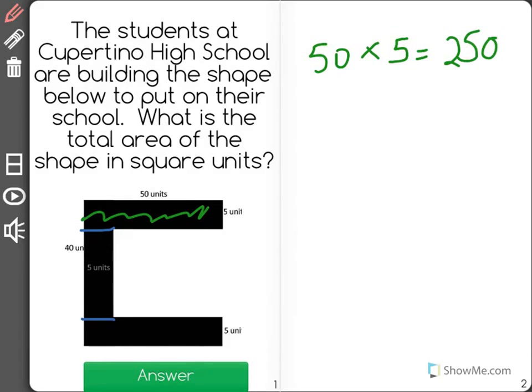For the blue rectangle, which is the bottom one, we know that the length is the same and the width is also 5, so it is also 250 square units.